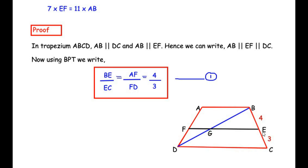In the trapezium ABCD, AB is parallel to DC and AB is parallel to EF, so AB is parallel to EF and EF is parallel to DC — all three are parallel. Using the basic proportionality theorem, BE over EC from triangle BCD is proportional to AF over FD from triangle ADB. So AF over FD also equals 4 over 3. Let this be equation 1.